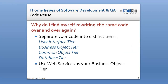A lot of times when I talk with developers, they ask me: why do I find myself rewriting the same code over and over again? This is a thorny issue that's quite simple to resolve. It's probably because you're writing the same code in the user interface and you're not really making it reusable. There's a very simple way to do that — you break your code down into several different levels.